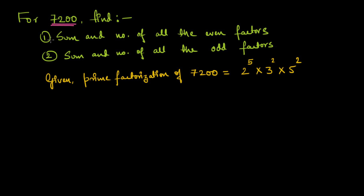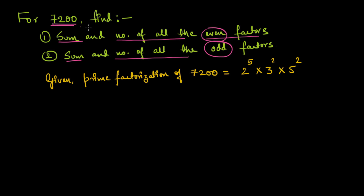For 7200, we need to find the sum and number of all the even factors, and the sum and number of all the odd factors. If the factors are divisible by two they will be even factors, and if the factors of 7200 are not divisible by two they will be odd factors. Since the prime factorization of 7200 is already given, let us start exploring this.